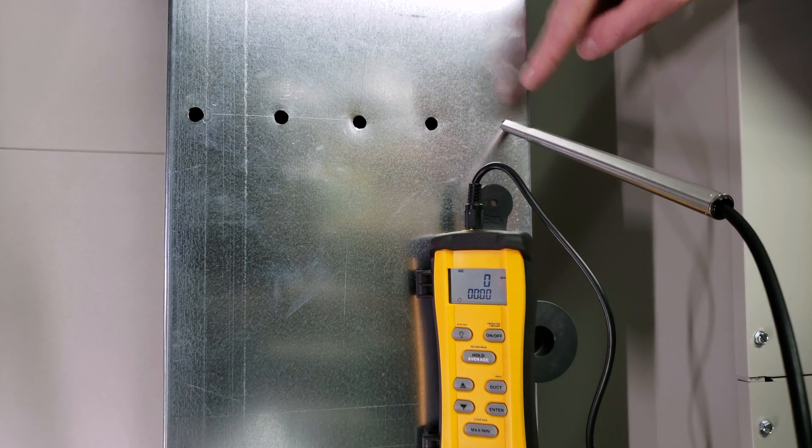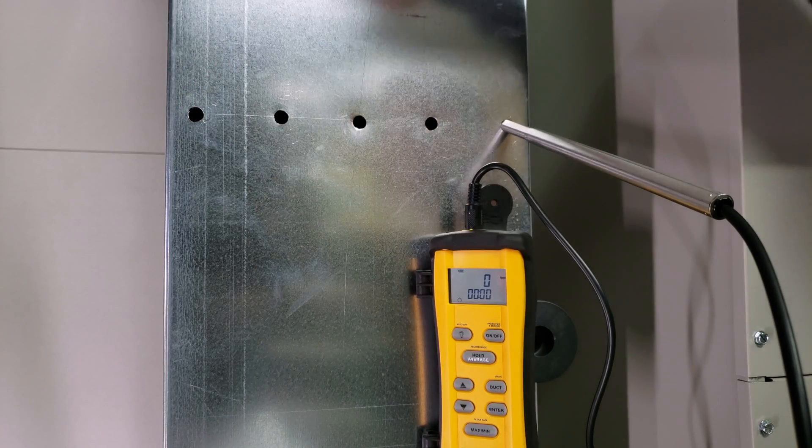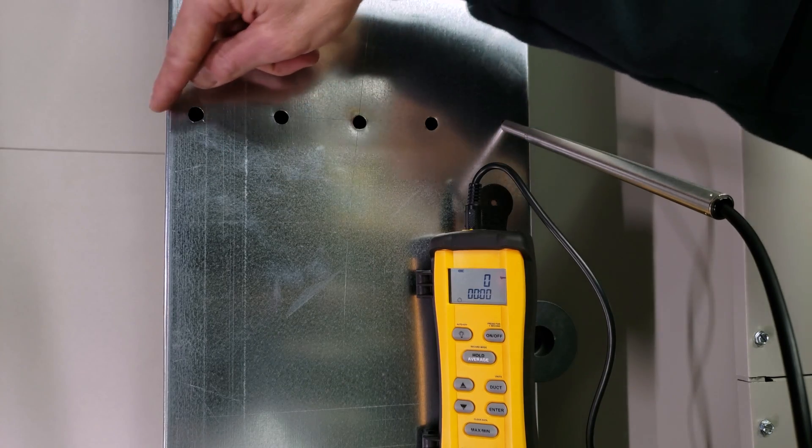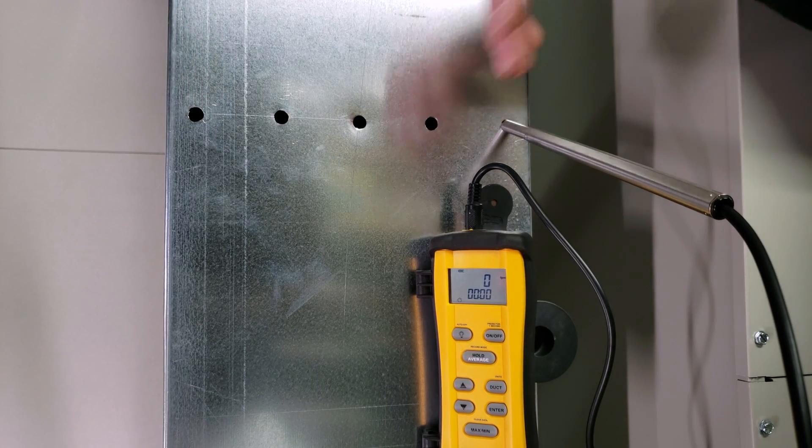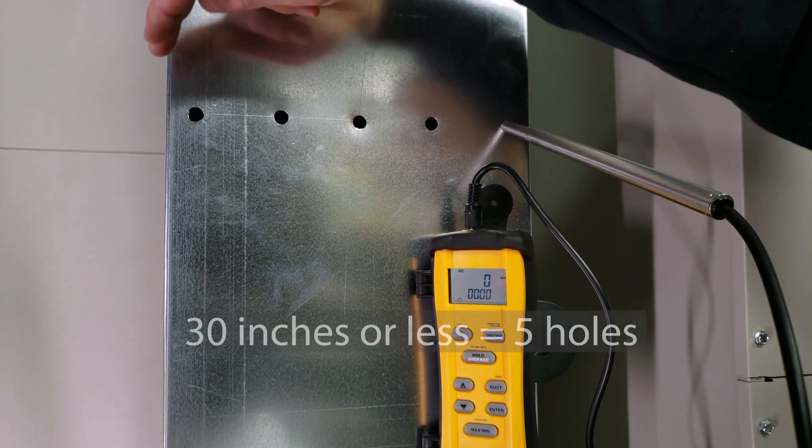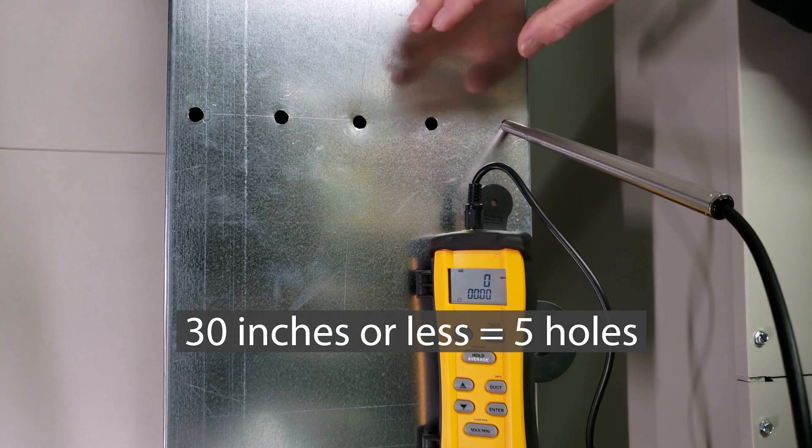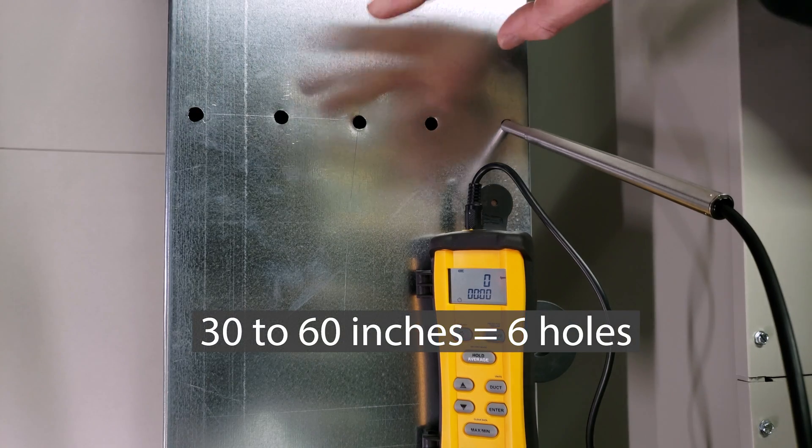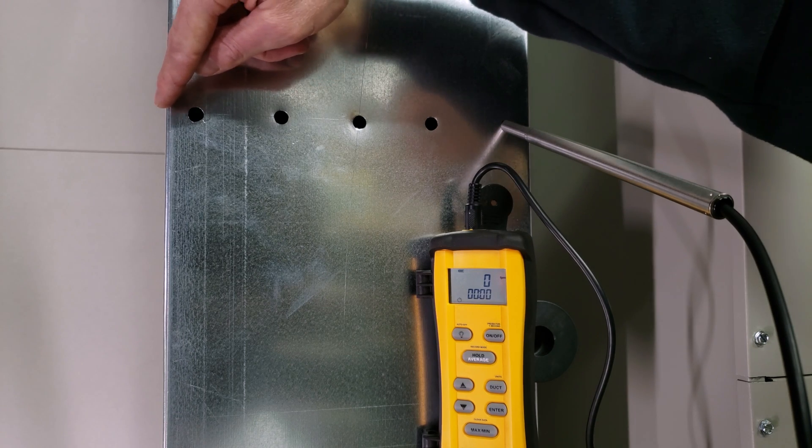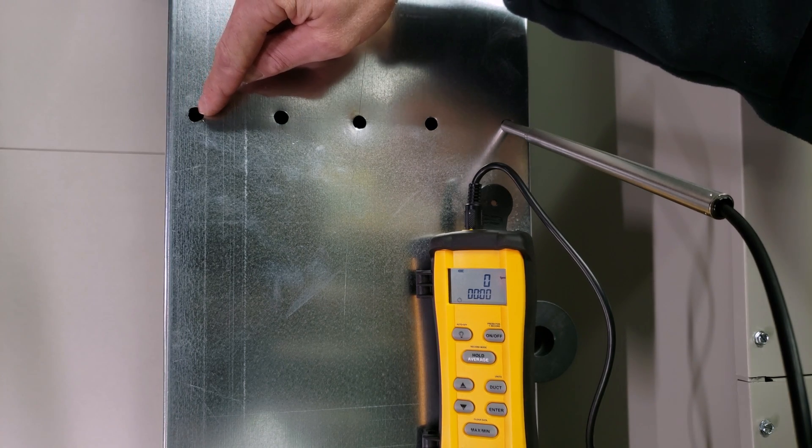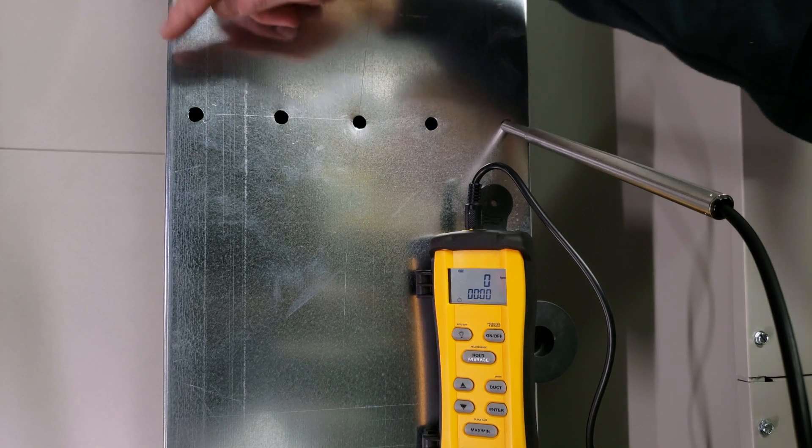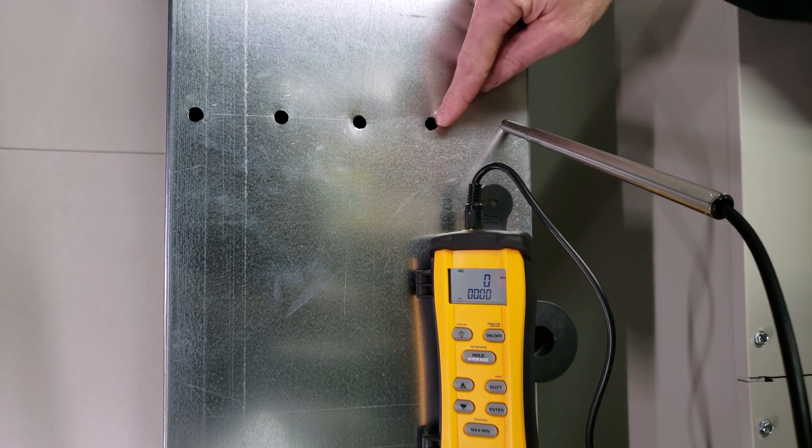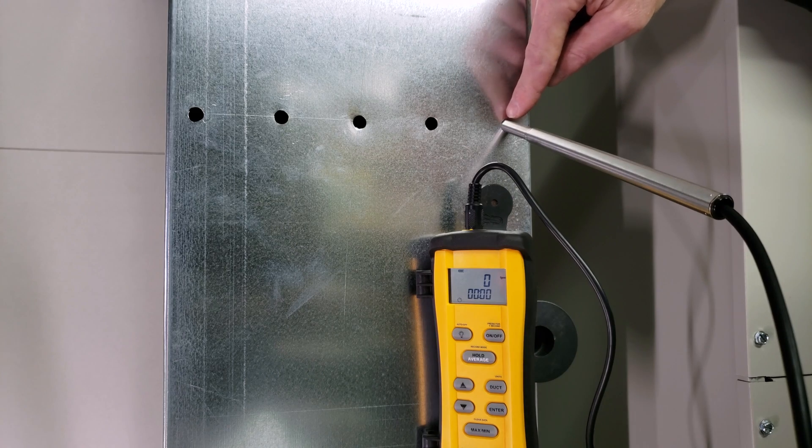We already have our holes drilled, but to determine where holes need to be drilled, ensure it's in a long straight section of duct close to the air handler. If the duct is less than 30 inches, drill five holes. If between 30 and 60 inches, you'd need six holes. For five holes, traversing points are at 7.4%, 28.8%, 50%, 71.2%, and 92.6% of the duct width.